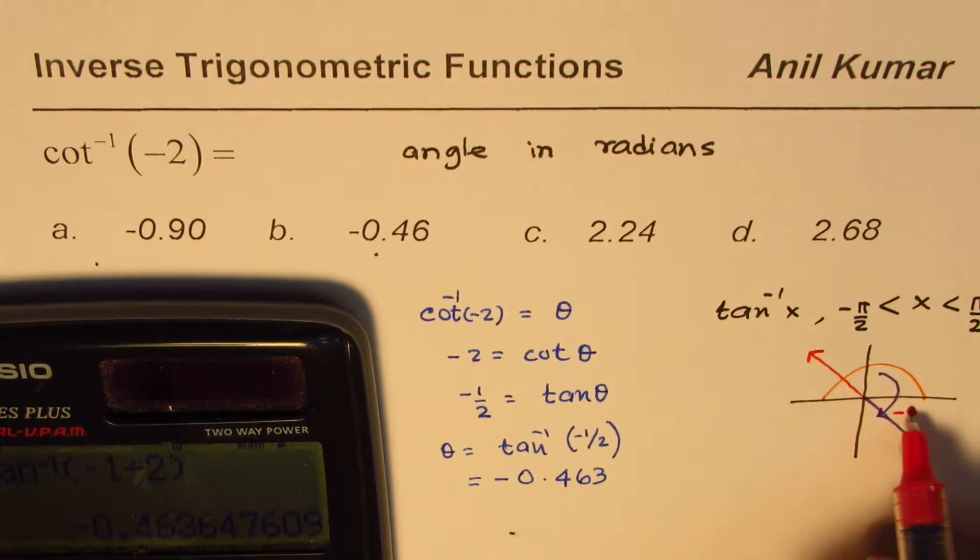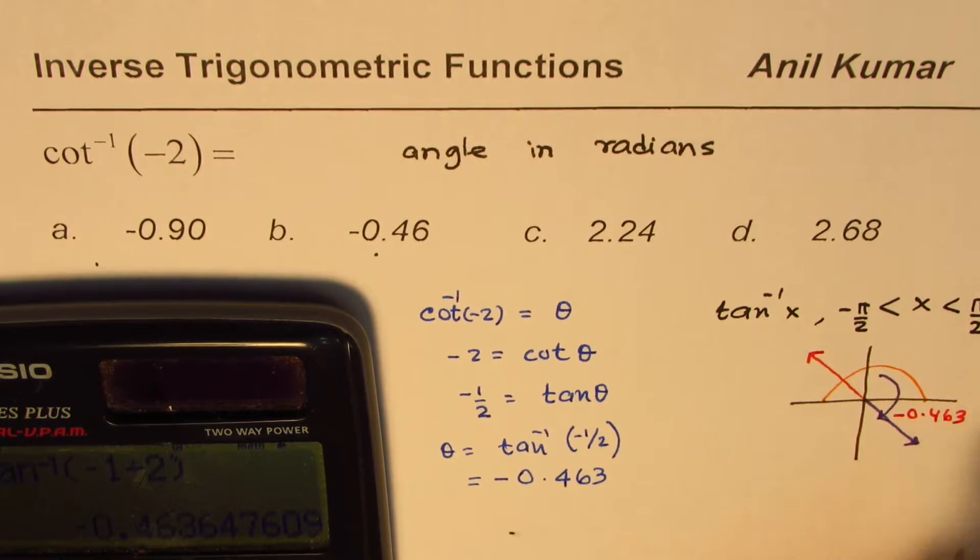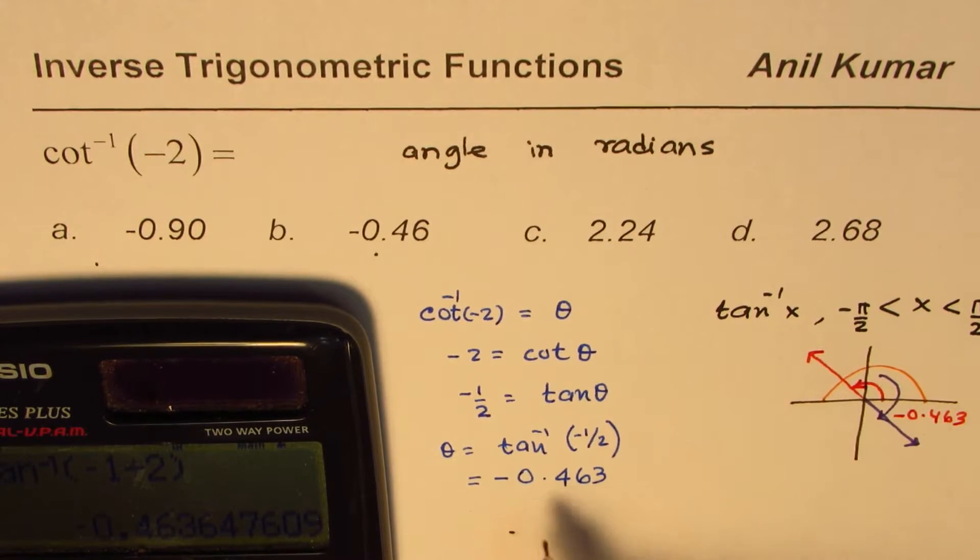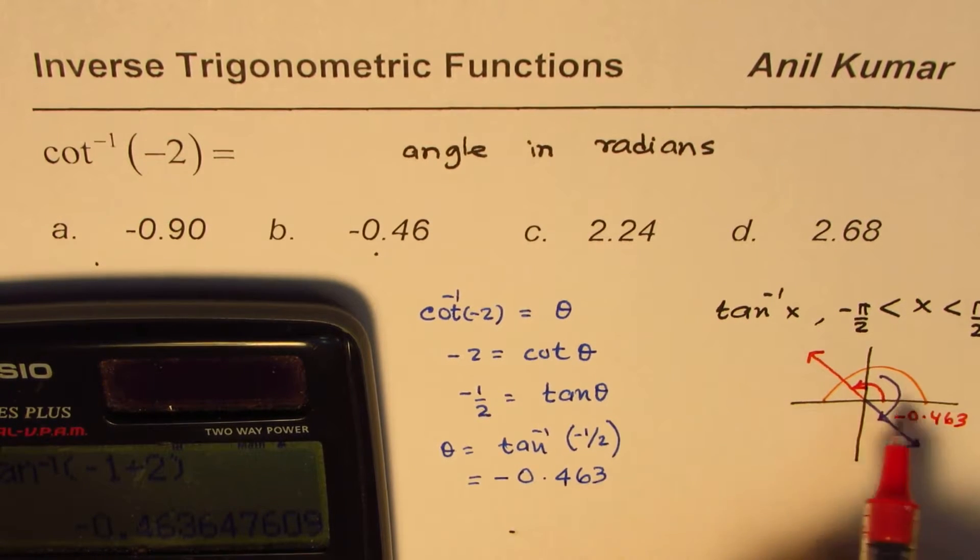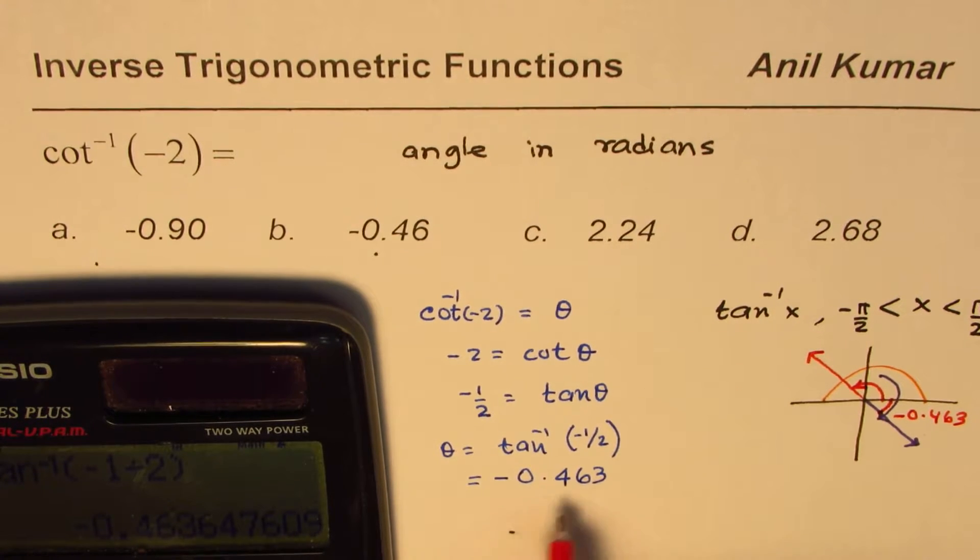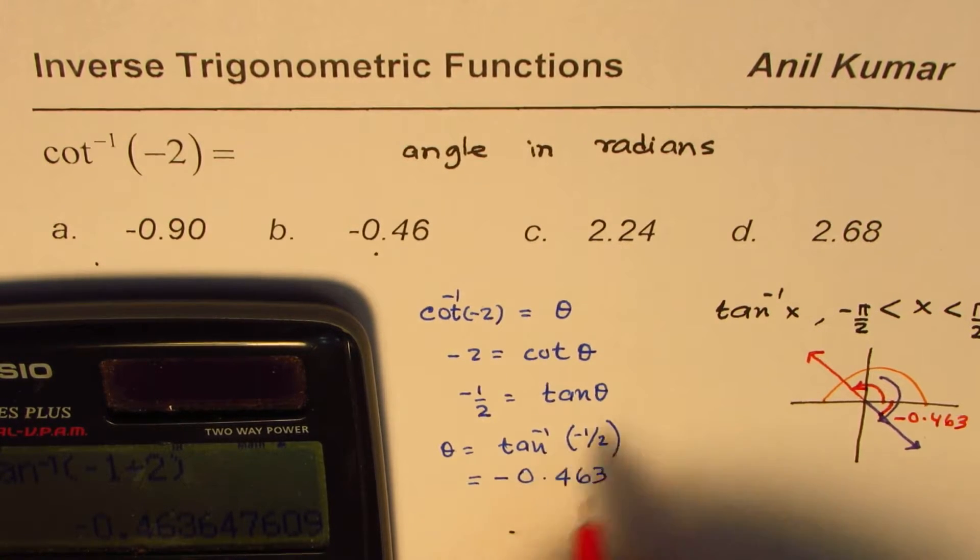So what we are looking for is a solution which should have been in cotangent. So from that result which is minus 0.463, you could actually get that result also. The only thing will be you need to add pi to this.